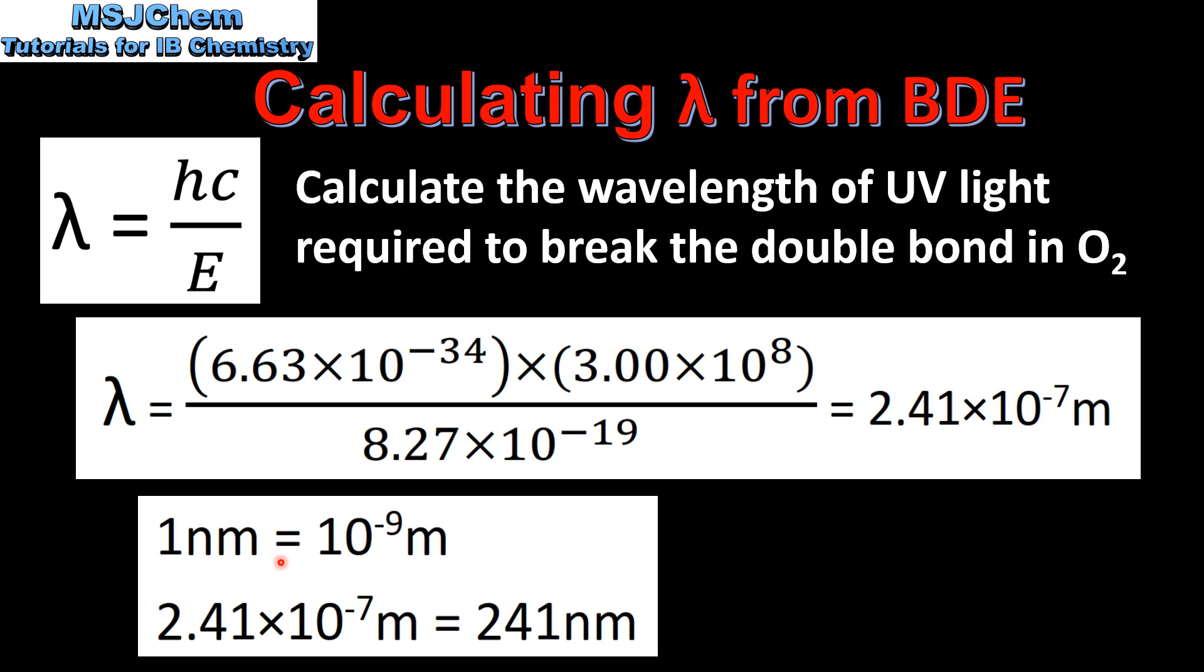One nanometer equals 10 to the negative 9 meters. We can convert this value in meters to nanometers and that gives us a value of 241 nanometers.